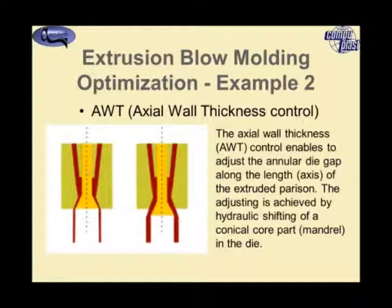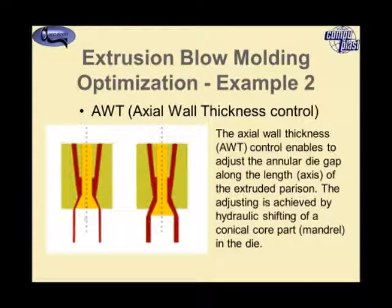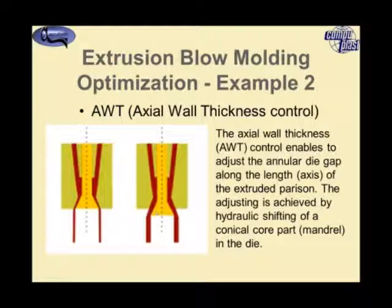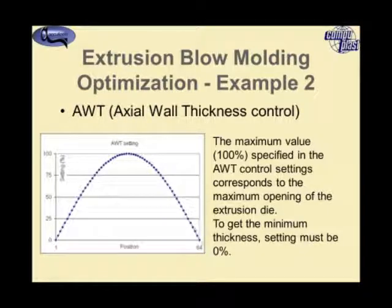With actual wall thickness control, the die lips — primarily the inner tooling — can be adjusted up and down so that when the opening is closed the parison wall thickness is smaller, and when the opening is increased the parison wall thickness also increases. By adjusting the movement of this inner die lip we can control the parison thickness profile in the extrusion direction. Here are the control settings as determined by the simulation to achieve the required thickness uniformity.